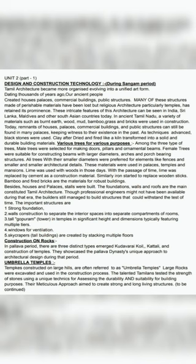Tall Gopuram towers in temples are of significant height and dimension, typically featuring multiple tiers. Windows provide ventilation, and tall buildings are created by stacking multiple floors. In the Pallava period, three distinct types of construction emerged: Kodavarai Kogil, Kattali, and temple construction. These showcased the Pallava dynasty's unique approach to architectural design during that period.